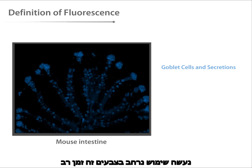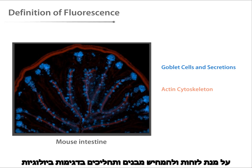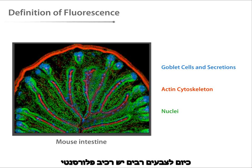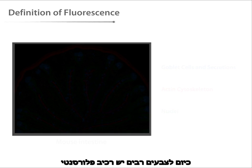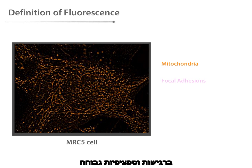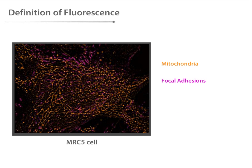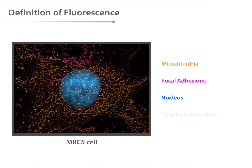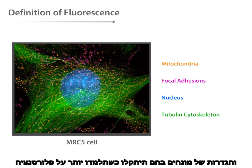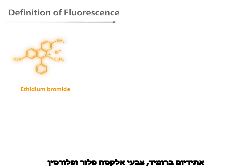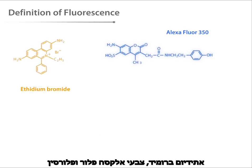Dyes and stains have long been used to detect and visualize structures and processes in biological samples. Today, many of the favored dyes and stains have a fluorescent component because fluorescent molecules can be detected with extraordinary sensitivity and selectivity. This tutorial will give you a basic introduction to the fluorescence process and definitions of some key terms. Examples of some widely used fluorescent dyes are ethidium bromide, Alexa Fluor dyes, and fluorescein.